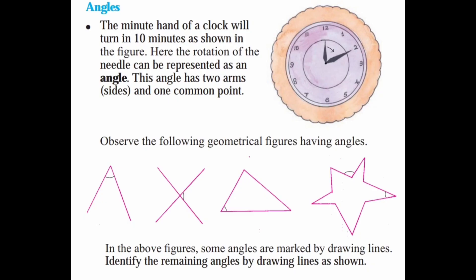Angles. The minute hand of a clock will turn in 10 minutes as shown in the figure. Here the rotation of the needle can be represented as an angle. This angle has two arms and one common point. Two rays are meeting at a point. So this is called an angle.